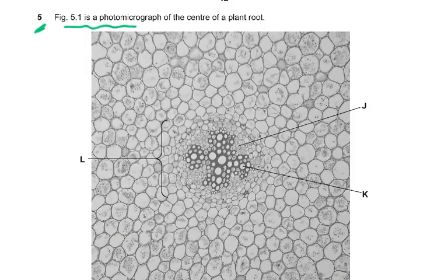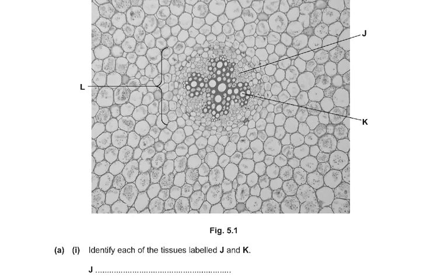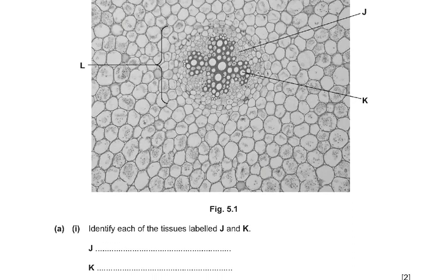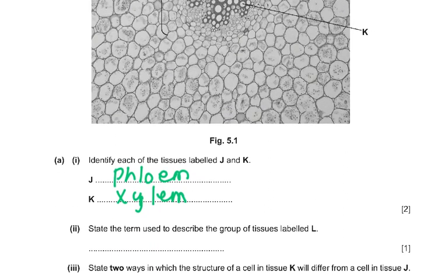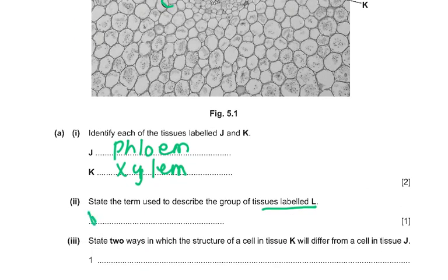Starting with question number 5: Figure 5.1 is a photomicrograph of the center of a plant root. Looking at the diagram, we have labels L, J, and K. J is the phloem and K is the xylem. The term used to describe the group of tissues labeled L is called a vascular bundle.